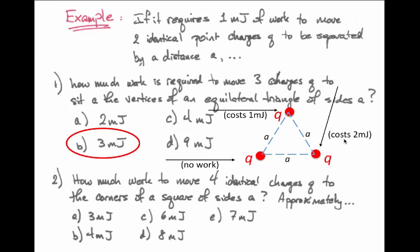We can also ask how much work is required to move four identical charges q onto the corners of a square of side a. Approximately it's one of these five values shown here. Again, we have to imagine a square each with side a, and we bring in our first charge that requires no work.